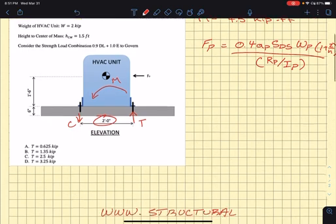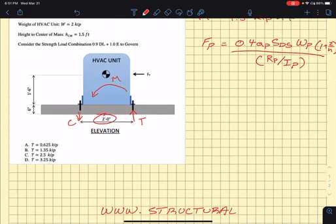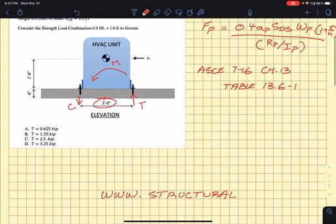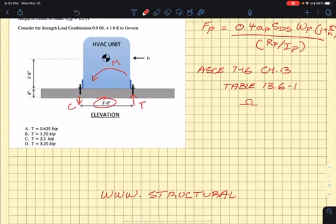So if you head over to the table at chapter 13, ASCE 7-16, table 13.6-1, and look up HVAC, you're going to find an omega factor, an overstrength factor of 2. All right, so now we can calculate the tension.